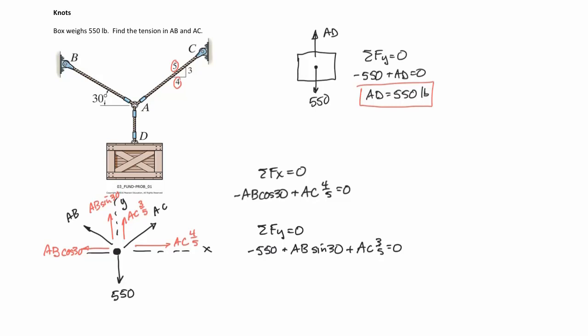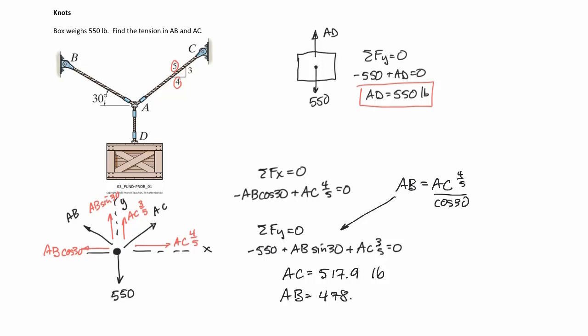This is a two-equations, two-unknowns problem. From equation one, AB equals (4/5)·AC divided by cos30. Substituting into the Y equation gives one equation with one unknown. Solving yields AC equals 517.9 pounds. Plugging AC back into either equation gives AB equals 478.6 pounds. That's the algebra and arithmetic from here on — I'll set up the equations and encourage you to verify the arithmetic yourself.